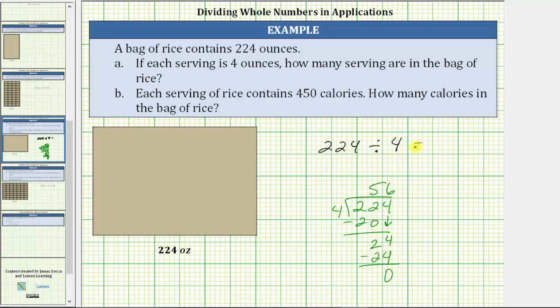We now know the quotient is 56, which means there are 56 four-ounce servings in 224 ounces of rice, or there are 56 copies of four in 224.